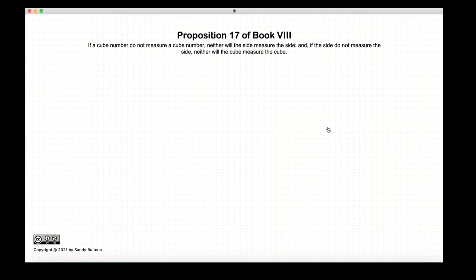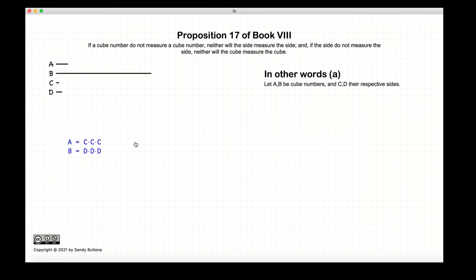In this proposition we have two cube numbers A and B where the sides are C and D respectively. This proposition states that if A does not measure B, then C does not measure D.